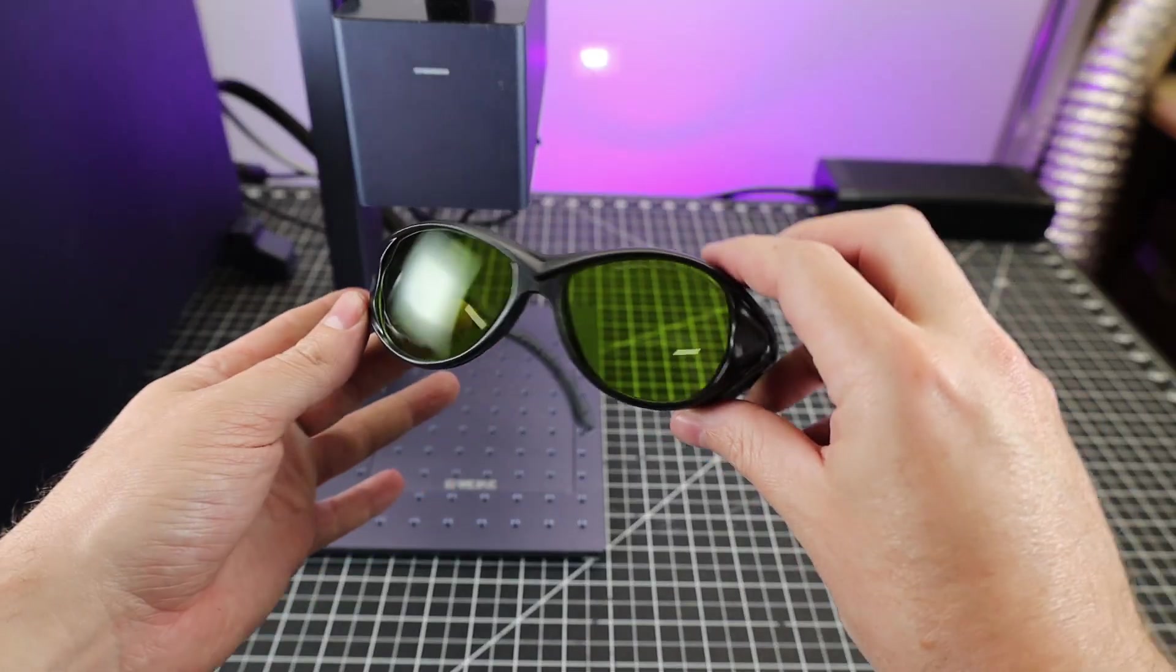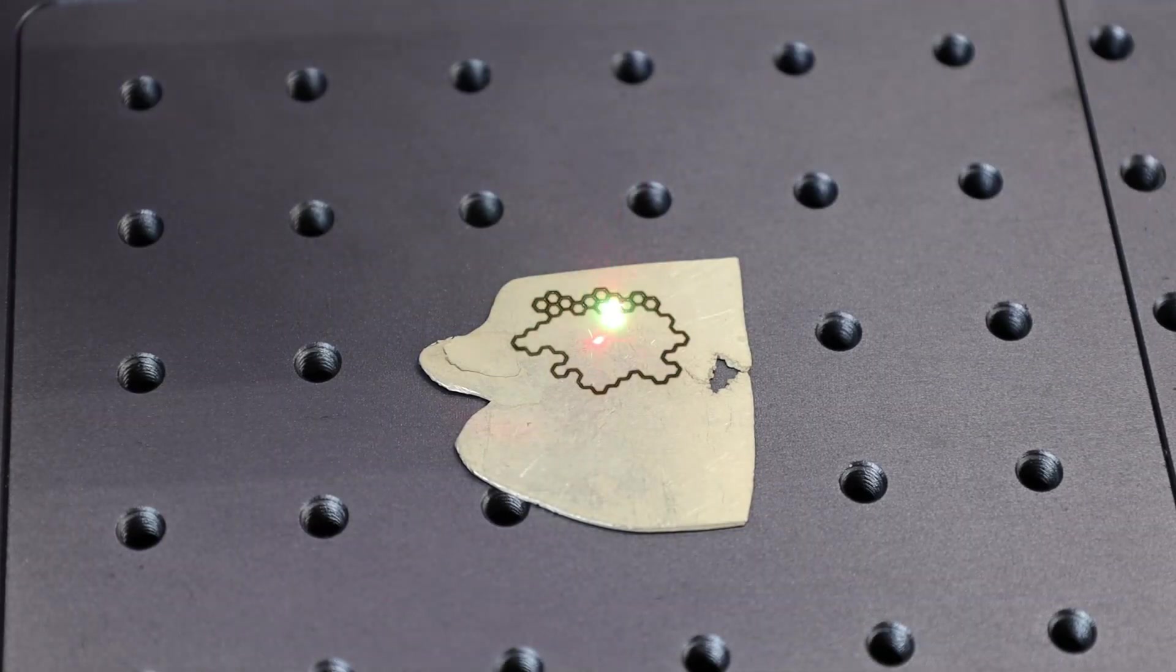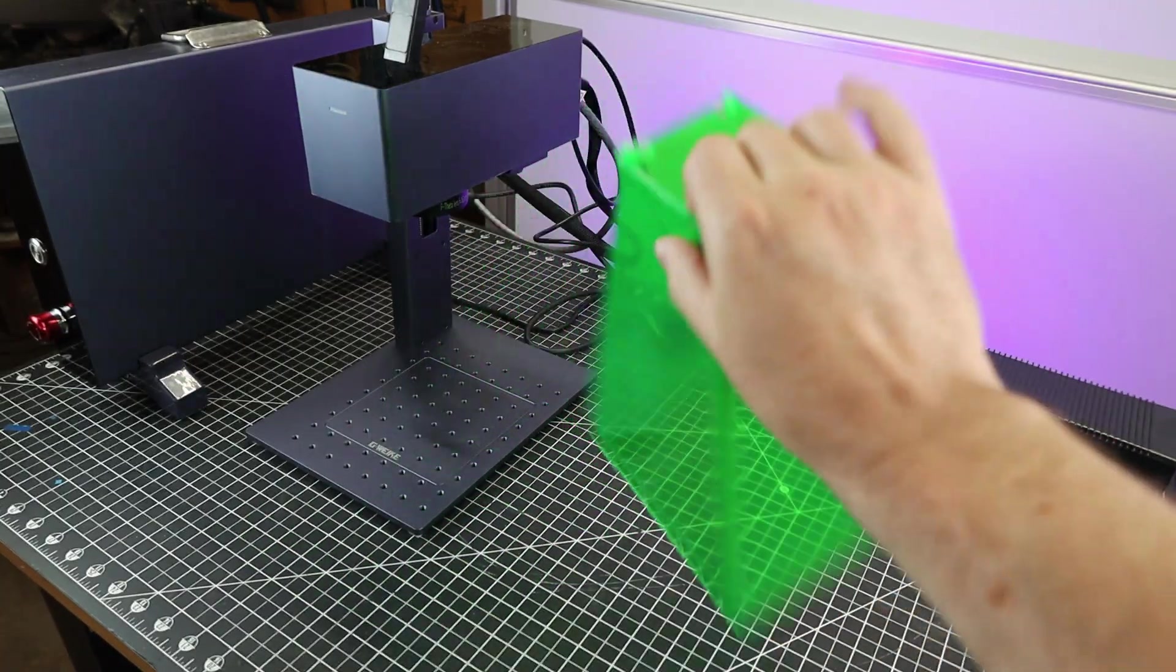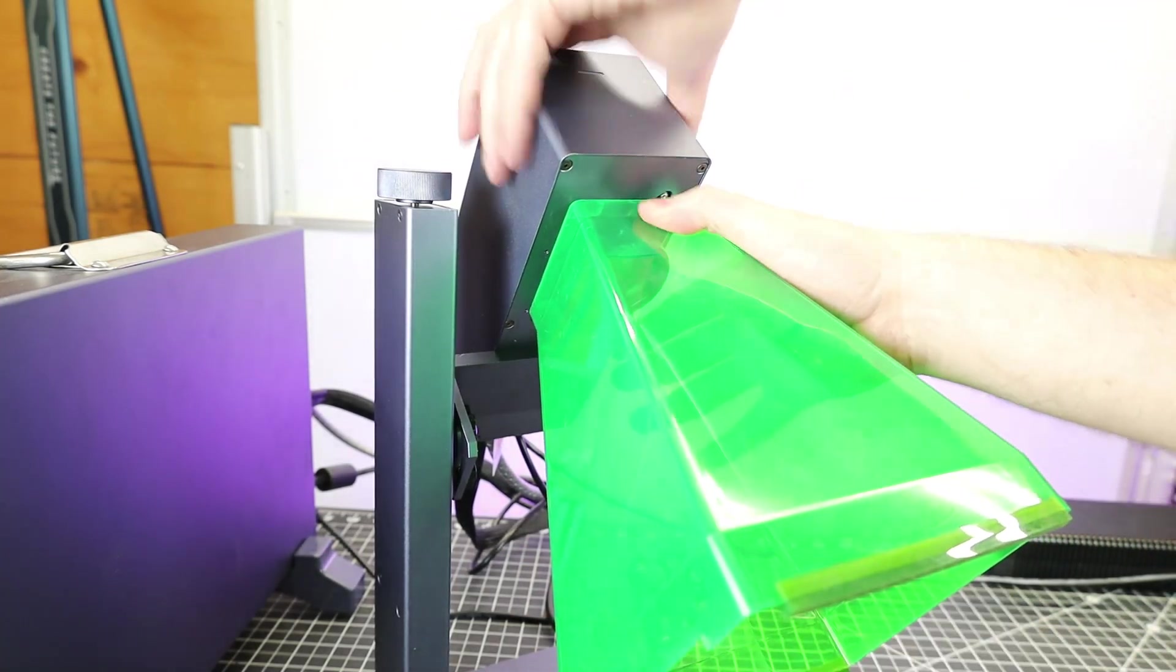And since we're on the topic of safety, this does come with eye protection as well, that you should be using whenever operating the machine, because you really don't want to risk the laser reflecting off the material directly into your eye. This did come with a vented green enclosure, so you'd be able to operate the machine with other people in the room, without everyone having to have glasses on.